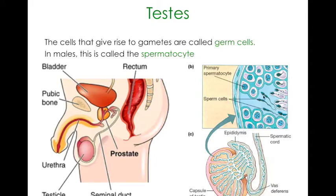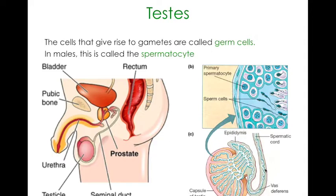The vas deferens connects the testicles to the seminal duct and is where sperm travel through. When fathers who've had children want to get a vasectomy - cutting and tying their tube - this is what they are cutting and tying: the vas deferens.